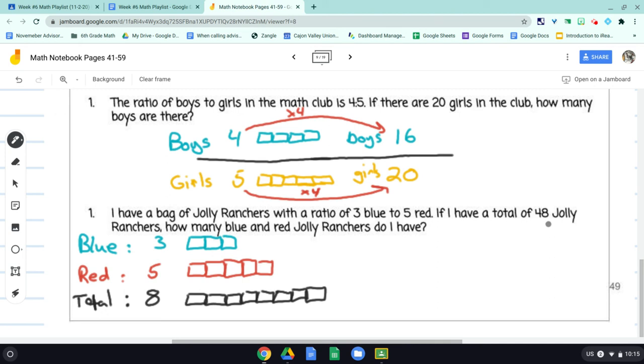But the question is, what if I have a total of 48 ranchers? How many are blue? How many are red? Okay. So I'm going to put a little dividing line here. And I'm going to say total now is 48. So we need to find out how many are red and how many are blue. Okay. So looking at this, I know that I can turn an 8 into a 48. And I know I can do that because 8 times 6 is 48. So 8 times 6 is 48. Now that I know that,